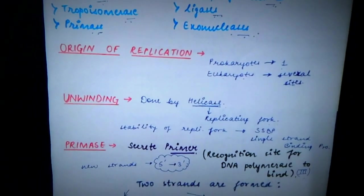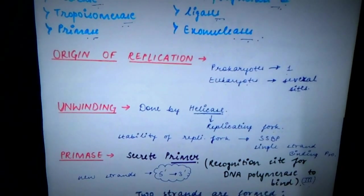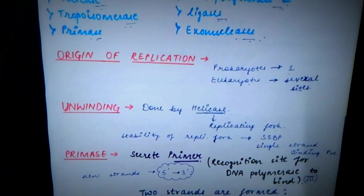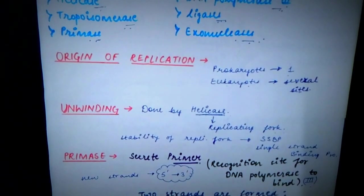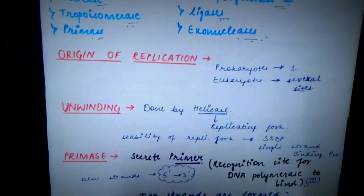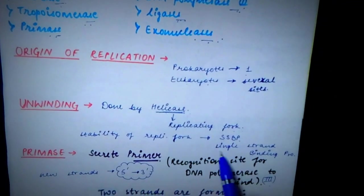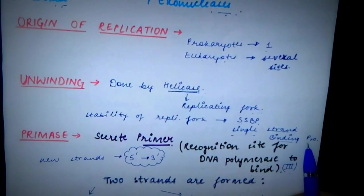So we studied that the action of helicase gives rise to the structure which is known as replicating fork. The stability of the replicating fork is maintained by a protein which is known as single-stranded binding protein, or you can remember it as SSBP, single-stranded binding protein.